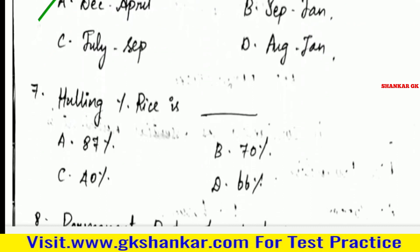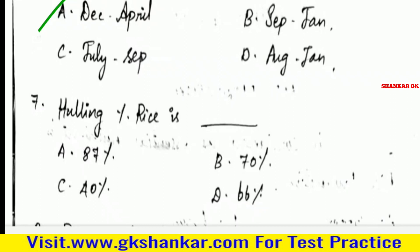Seventh question: Hulling percentage in rice is — A. 87%, B. 70%, C. 40%, D. 66%. Answer: D. 66%.